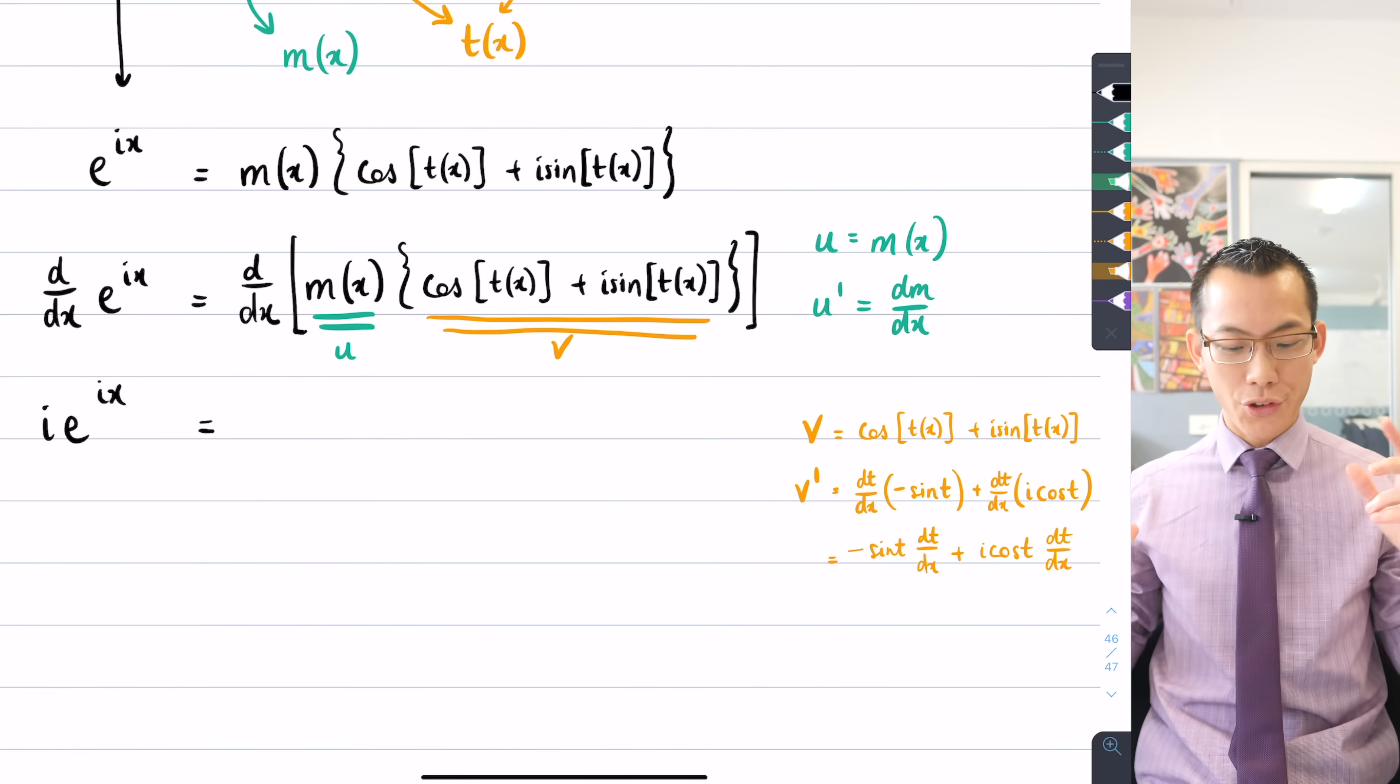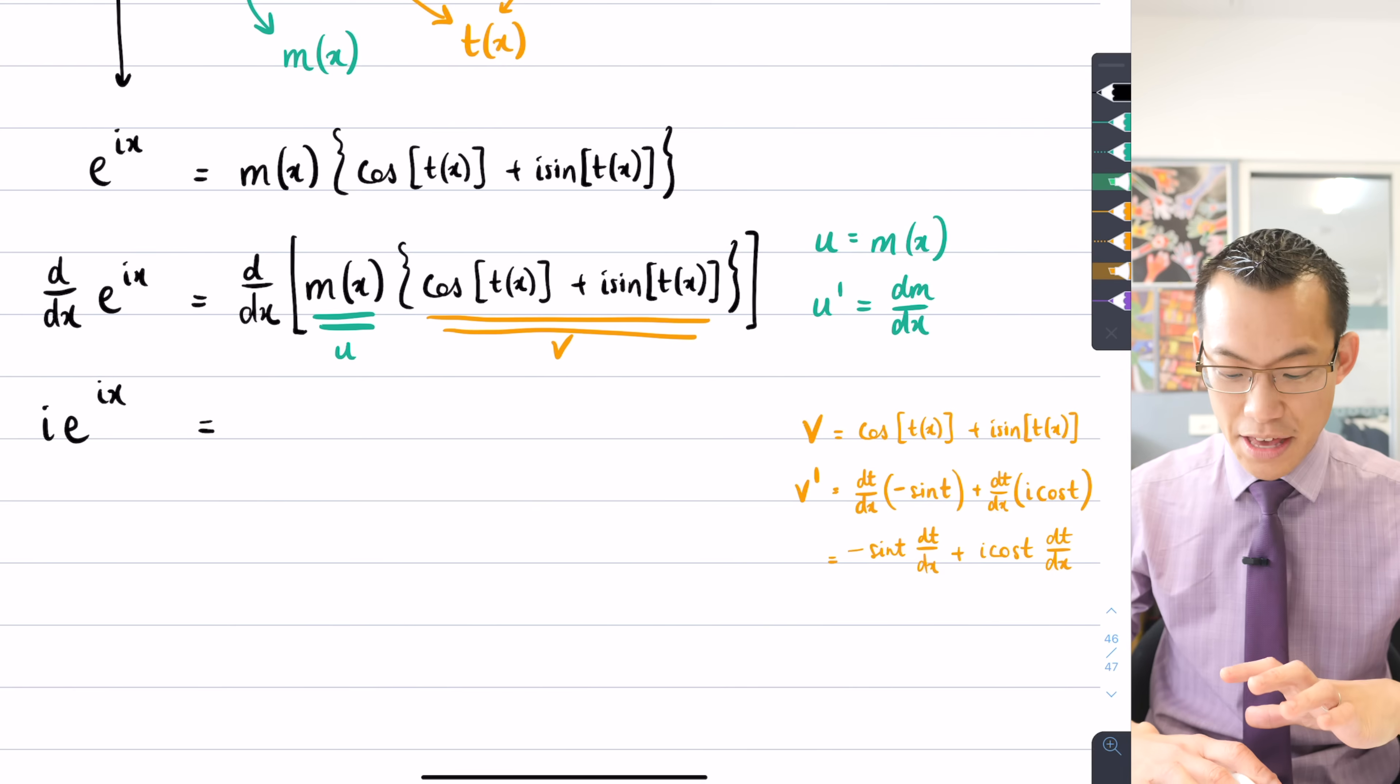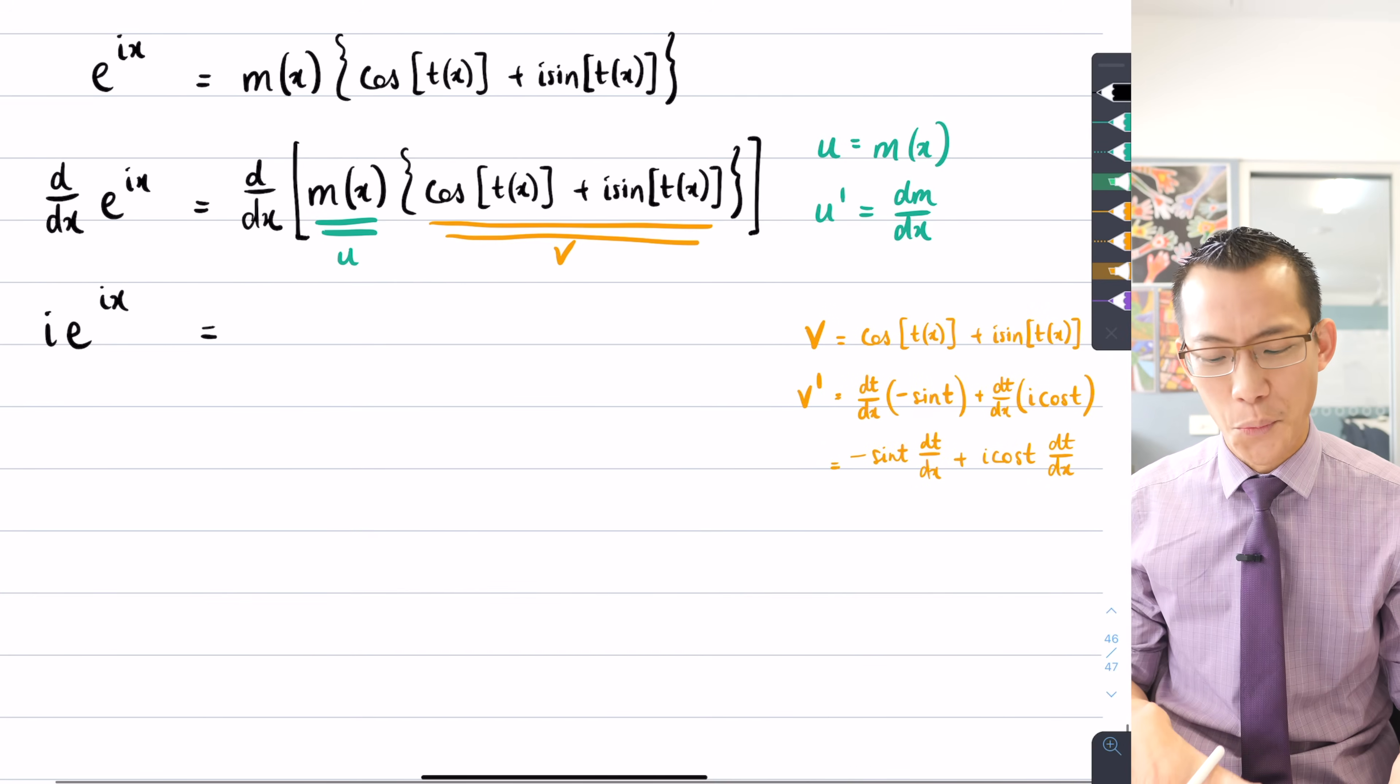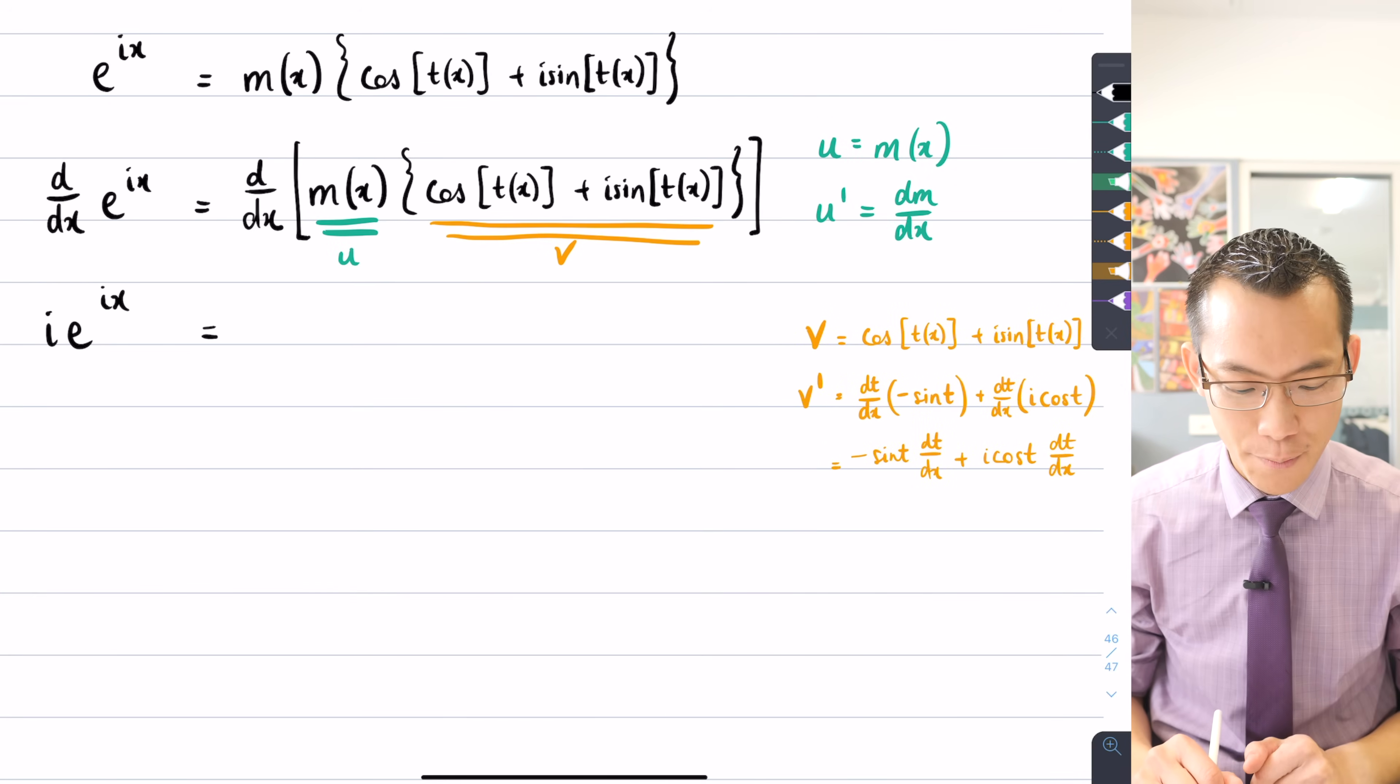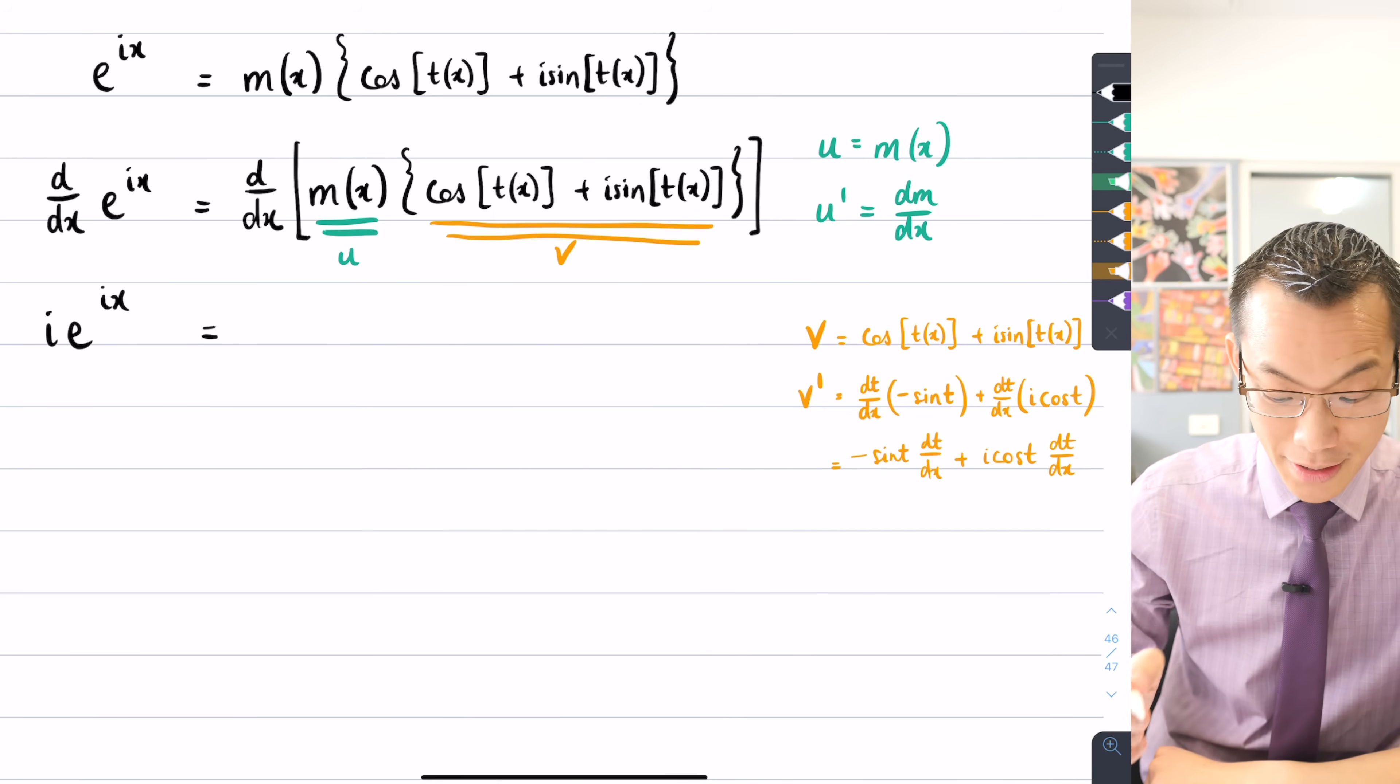There's a lot there, but thankfully this is probably about the worst point. Once I start substituting all this in, it will start to collapse together from there. Alright, so v u', u v', here we go.